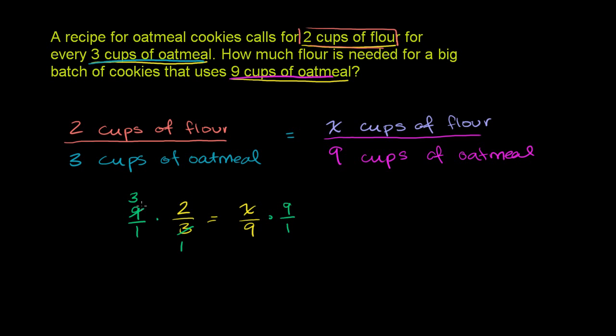So it's 6 over 1. And that's going to be equal to, well, this 9 in the numerator and this 9 in the denominator, they cancel out. They can both be divided by 9. So they cancel out. So that is equal to x over 1.